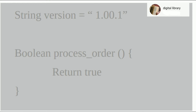In this example, the program declares a string orderVersion equal to 1.00.1 and a boolean processOrder set to true. Since a specific type of access modifier is undefined, any command or function can be used to access the program component, and processOrder can be modified.